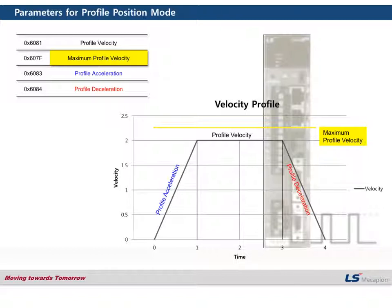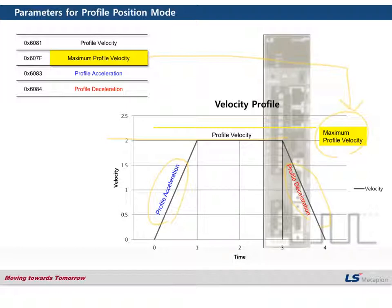This is the example of the profile in PP mode. As we checked on the previous page, there is an acceleration section, a deceleration section, and a constant velocity section. These parameters are set by the user depending on the system and are for profile position mode only. Maximum profile velocity is used to limit the velocity, and profile velocity sets your target velocity. You can also set the profile acceleration and profile deceleration here.